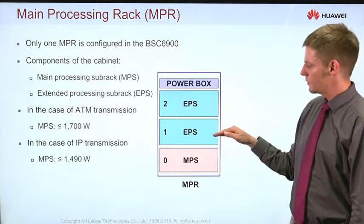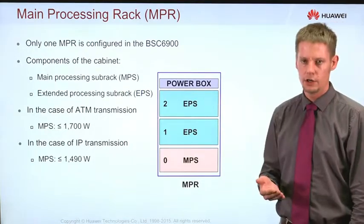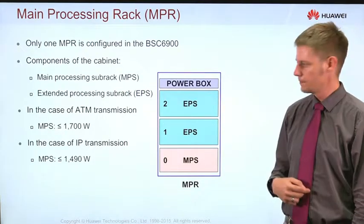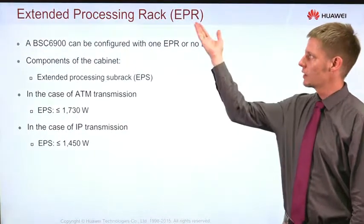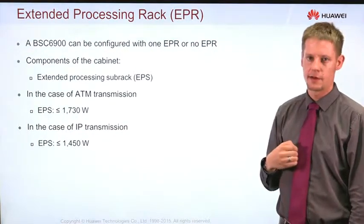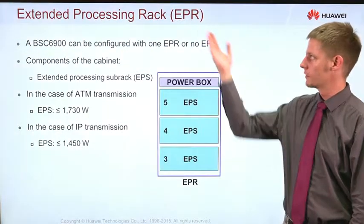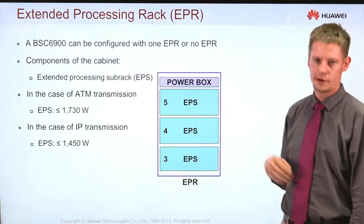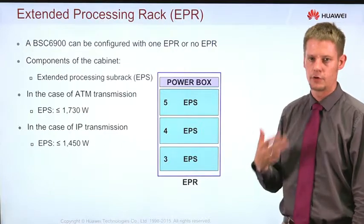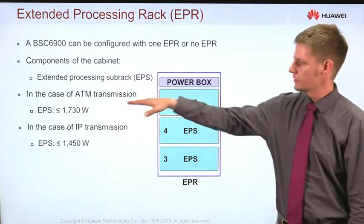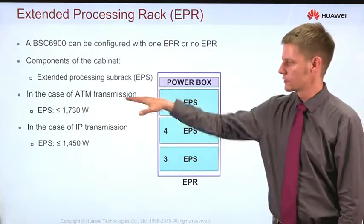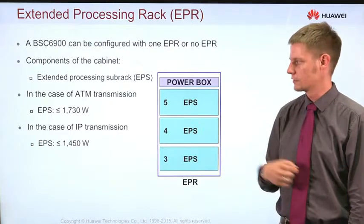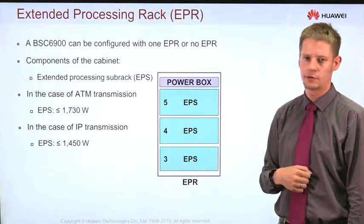The extended processing subracks are only needed if we need more capacity, and if we need even more capacity we have another rack — the extended processing rack with up to three more subracks: three, four, and five. We also see that for the extended processing subracks there are some differences in the power consumption.